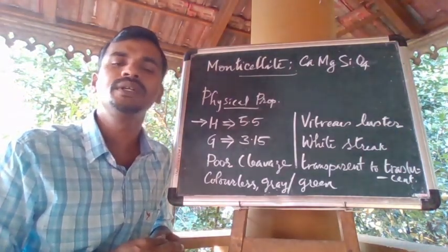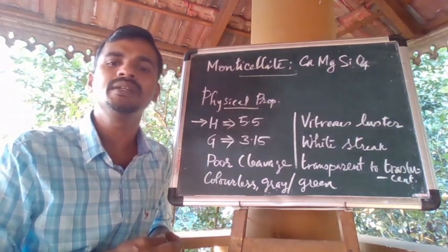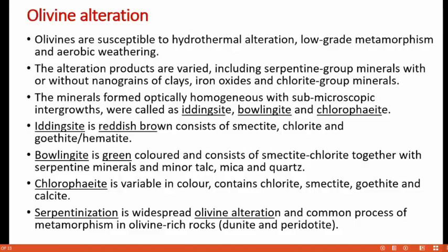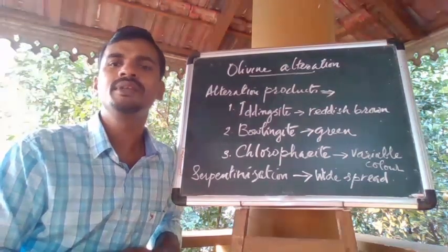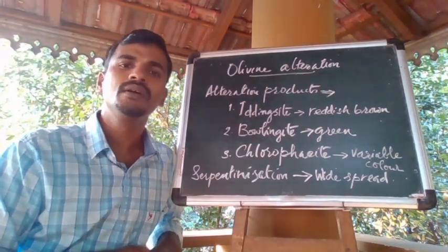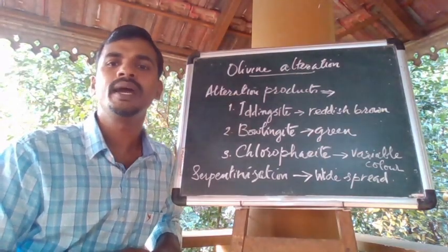Monticellite is found generally in skarns and less commonly in regionally metamorphosed rocks. Now let's discuss the alteration of olivine. Olivines are susceptible to hydrothermal alteration, low-grade metamorphism, and aerobic weathering. The alteration products include the serpentine group of minerals, with or without nanograins of clay, iron oxides, and chlorite group of minerals. Minerals formed as optically homogenous submicroscopic intergrowths are called iddingsite, bowlingite, and chlorophaeite.